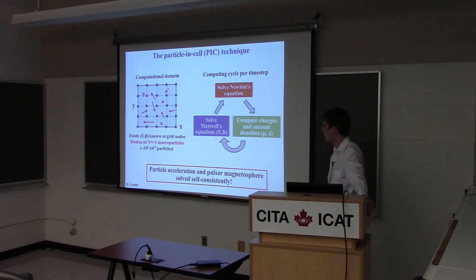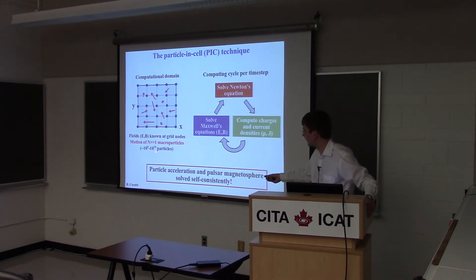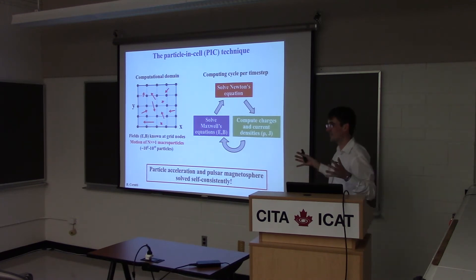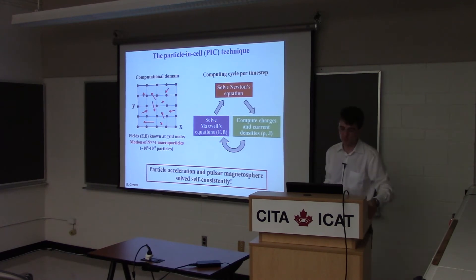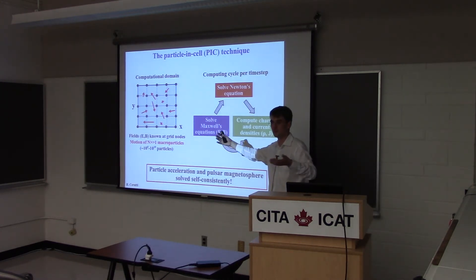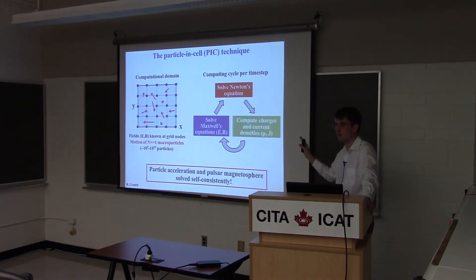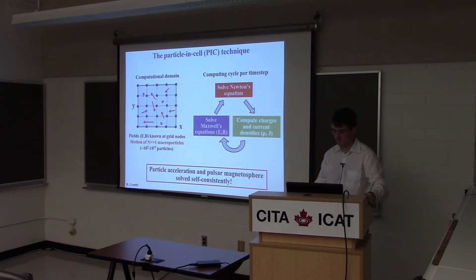Why are these simulations kicking in nowadays? Because you need a lot of computing power — you need 10^8 to 10^10 particles in 2D or 3D. You need a very large system to resolve all the scales of a microscopic system like pulsars, with large separation between the Larmor radius of particles and scales like the radius of the star. Of course we can't reproduce the whole thing in our computing box, but we try to stretch all these scales as far as possible and hope it won't change too much qualitatively.